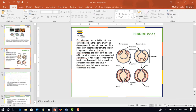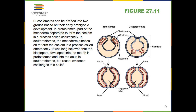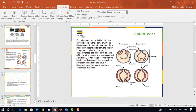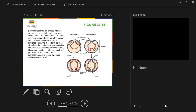Last time we talked about the different criteria you can use to organize different organisms. We talked about symmetry, the number of germ layers, whether or not you have a cavity in addition to the gut, and if you do, is it a real cavity — meaning lined by mesoderm on both sides. The last one is whether the organism is a protostome or a deuterostome.